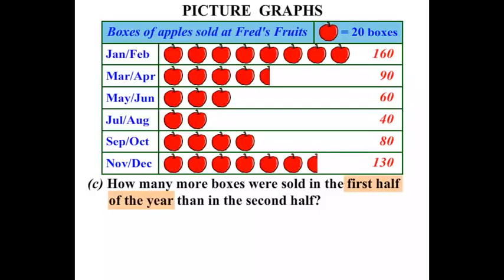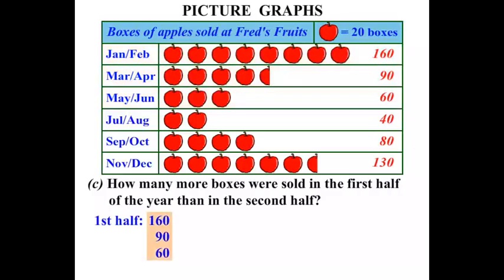Going back to the question, we're comparing the first half of the year with the second half. So the first half — as shown on the diagram there — let's write down the numbers required: 160, 90, and 60. When we add them up, we find that we get 310 boxes altogether.